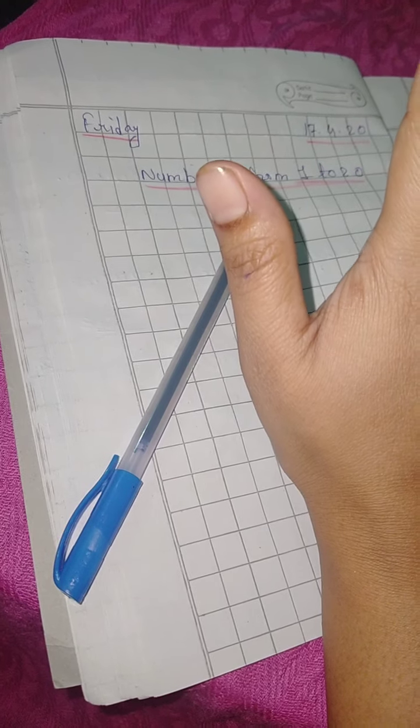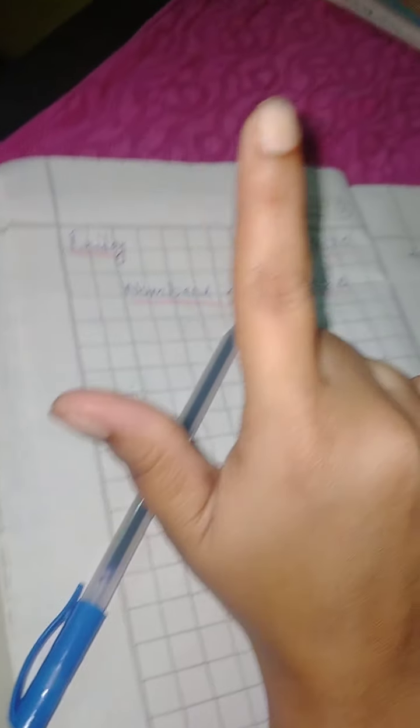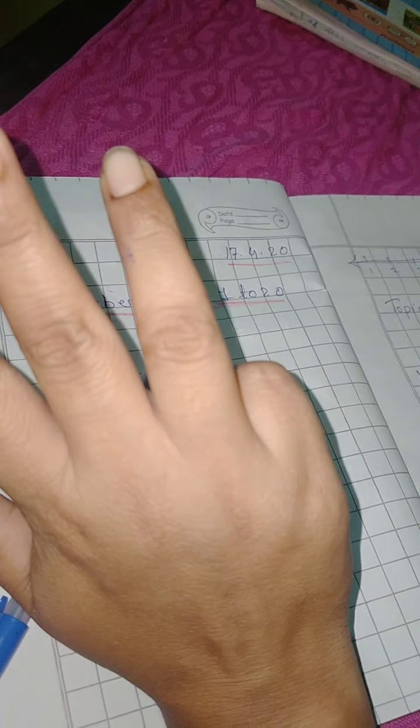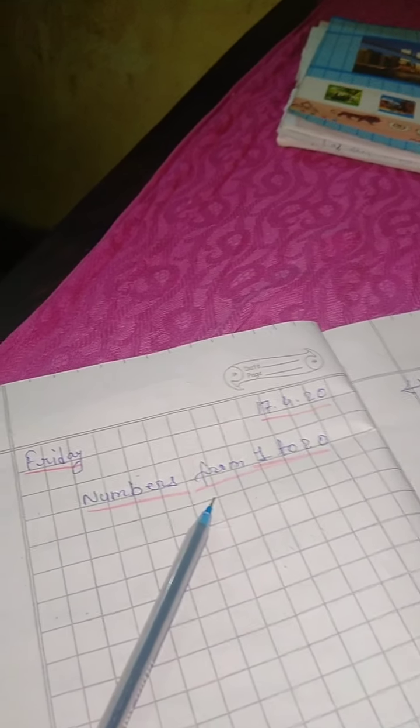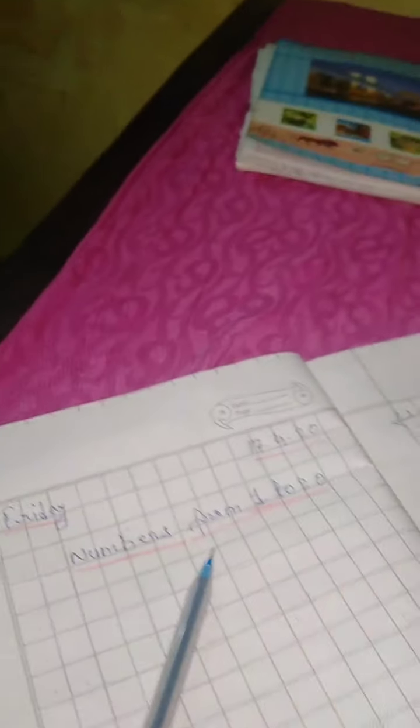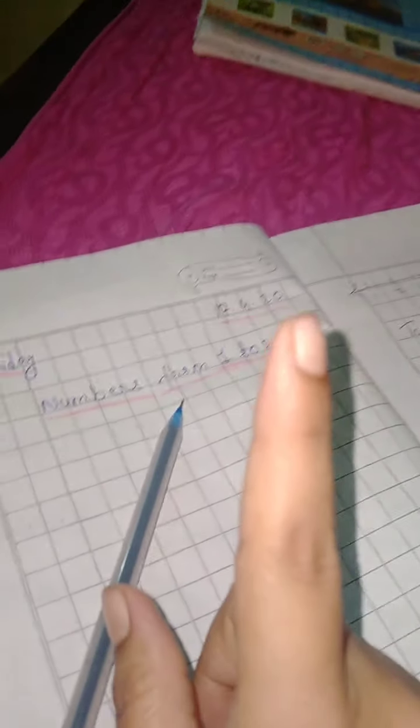All of you start counting: 1, 2, 3, 4, 5, 6, 7, 8, 9, 10. Okay, 5 fingers in one hand and 5 fingers in another hand, and total it is 10 fingers.